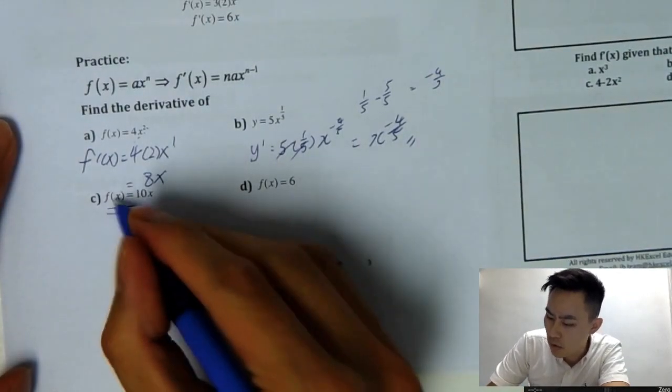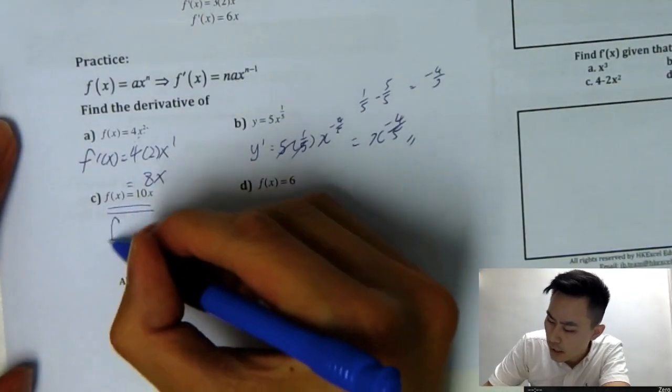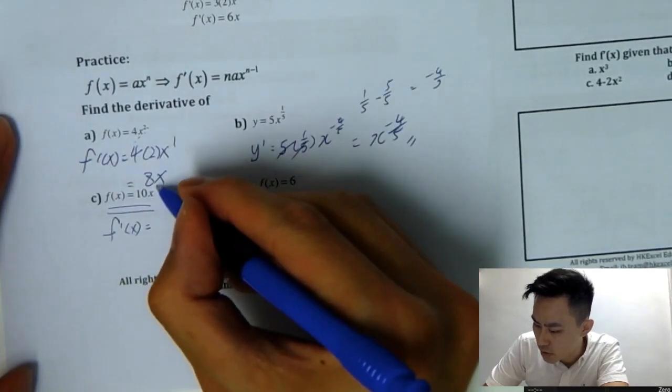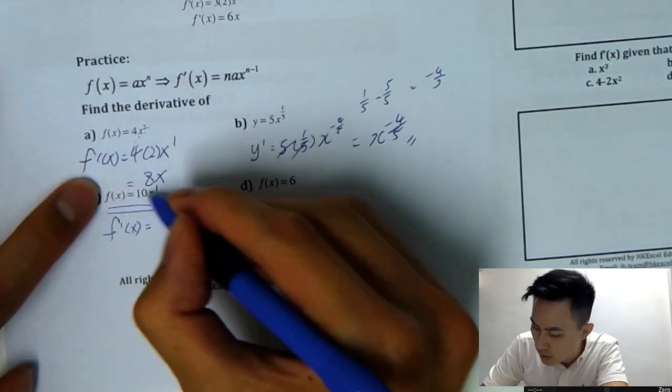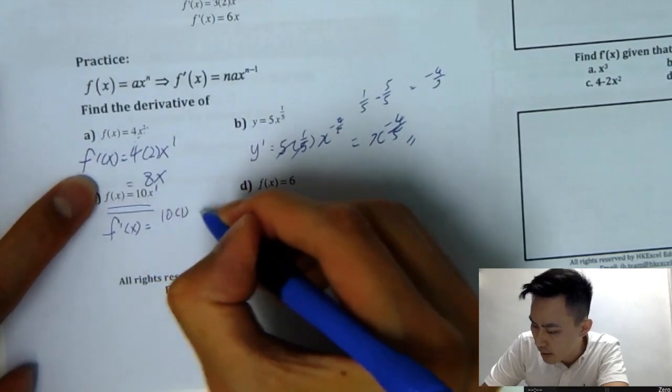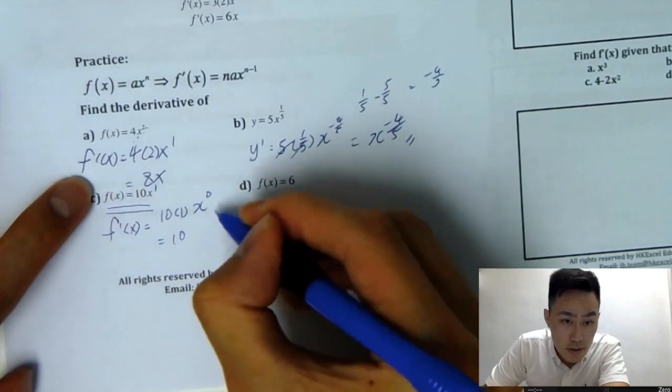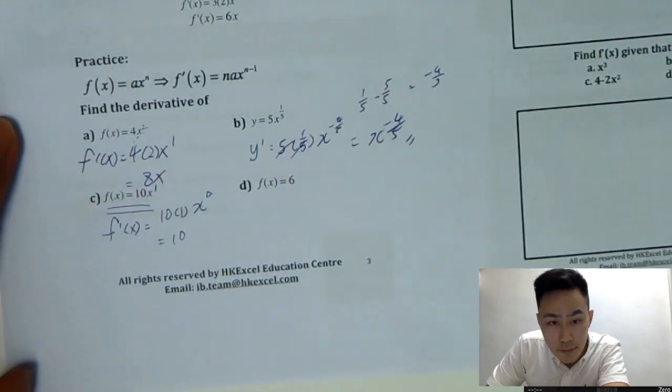And how about fx equals to 10x? Very simple. f prime of x equals to 10. So fx equals 10x. So you multiply 1 here. And then x, 1 minus 1 is 0. And this is just 10x squared. So 10x power 0. So that would be just 1 here.